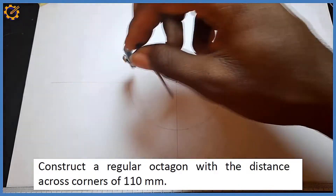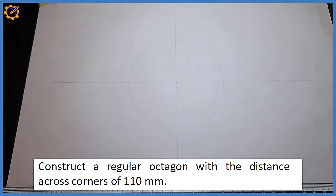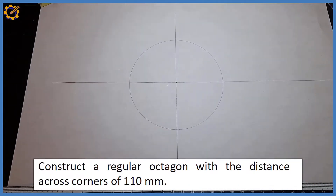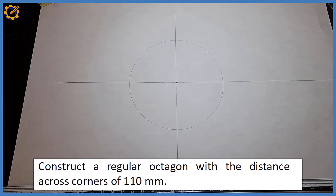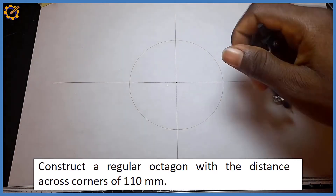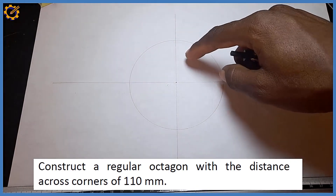Take note: the lines I produced earlier and this circle should be in thin continuous line — they should be thin. Only the octagon itself will be thick. The octagon is eight-sided, and each of the angles I'm going to divide it by is 45 degrees.